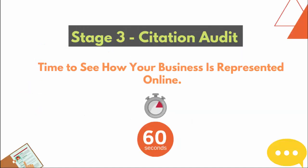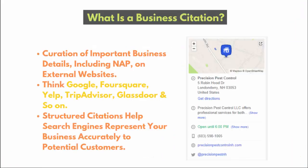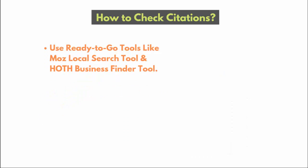Stage three — citation audit. It's time to see how your business is represented online. A business citation is where your name, address, and phone number appear on external websites — Google Business, Foursquare, Yelp, TripAdvisor, Glassdoor, and so on. A structured citation has this information filled in properly in schema markup format. An unstructured citation would be, for example, if you copy-pasted your NAP into a press release and distributed it.